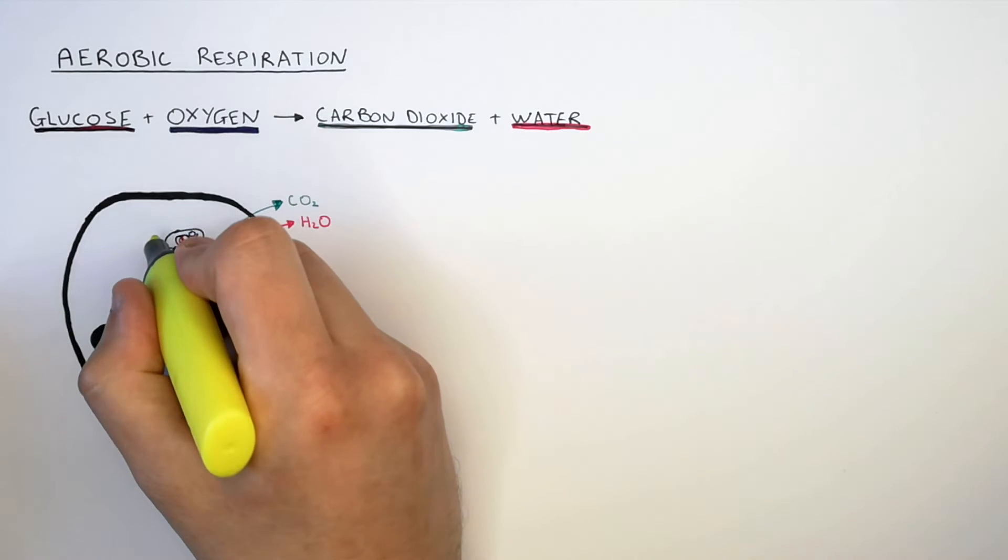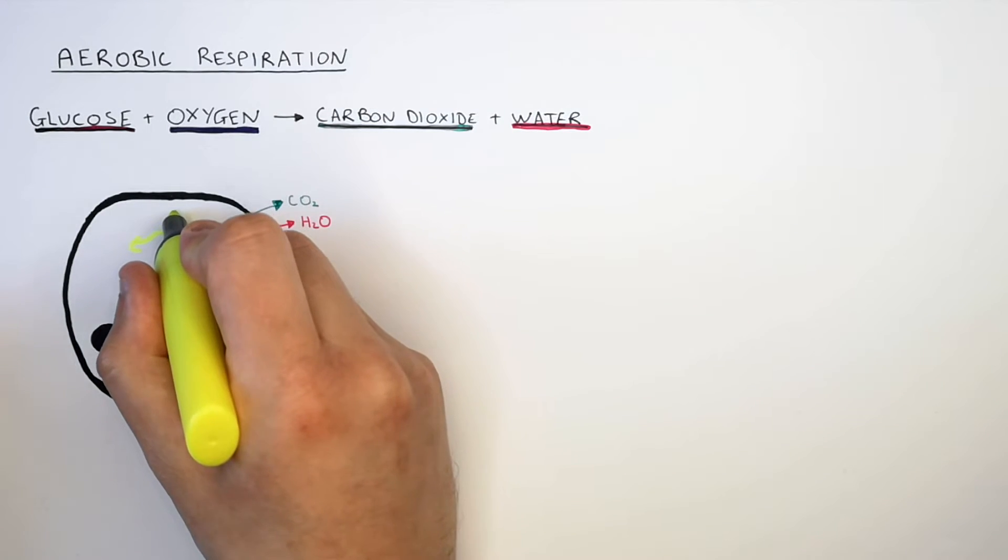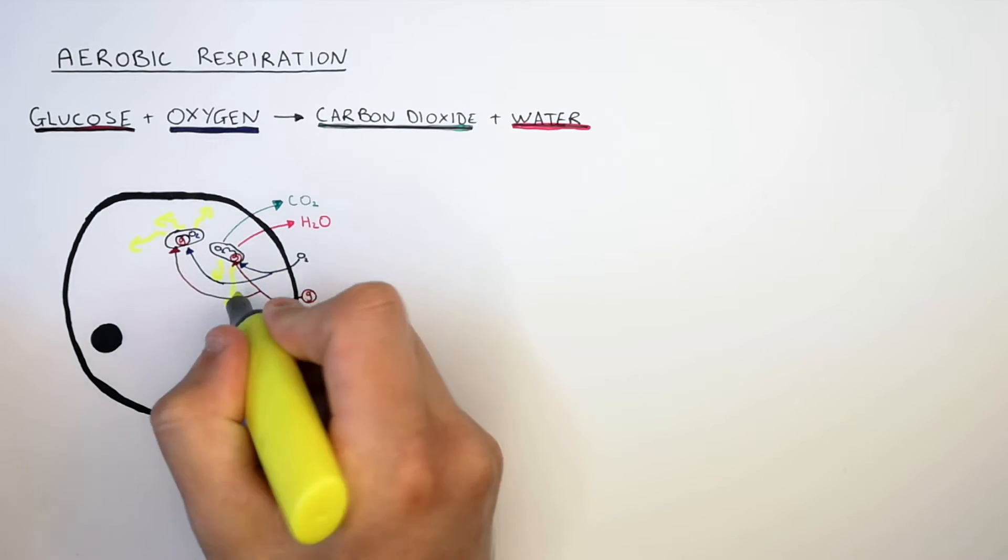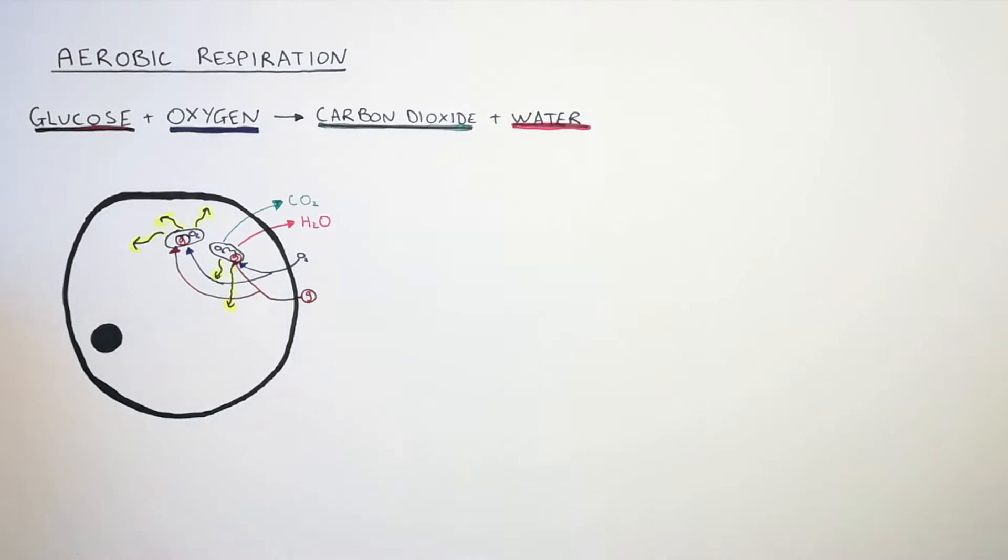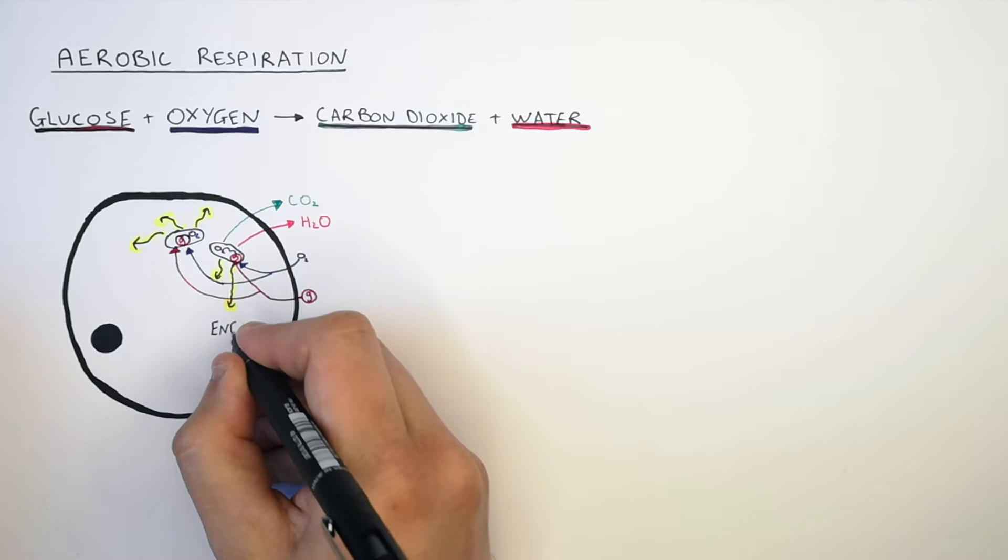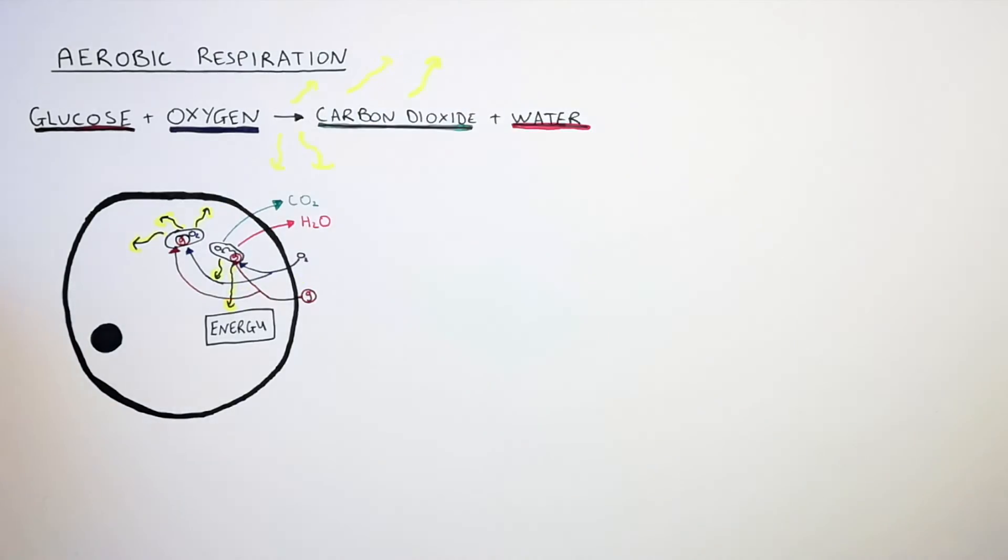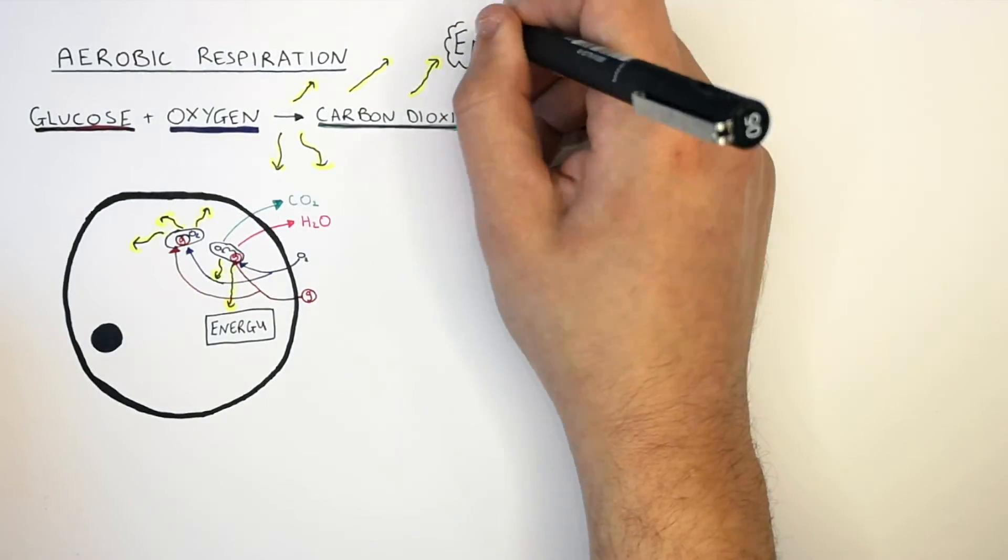Respiration in the mitochondria is an exothermic reaction. Therefore, there is a release of energy from the mitochondria into the cell. As you can see here, energy is being released from the mitochondria into the cell.